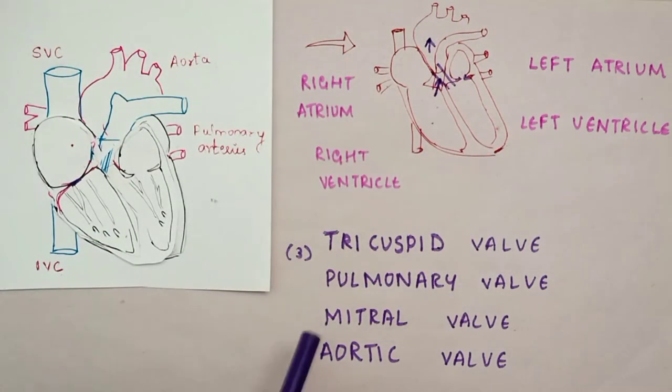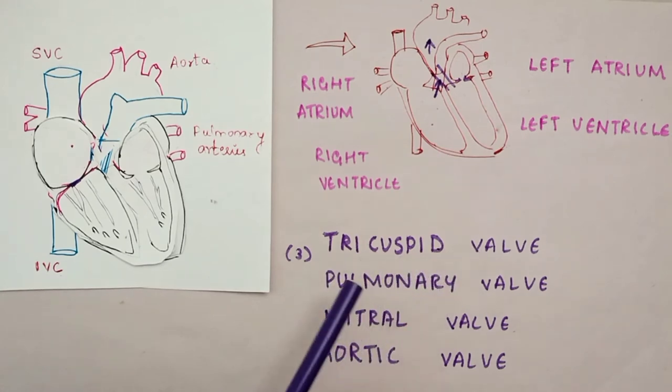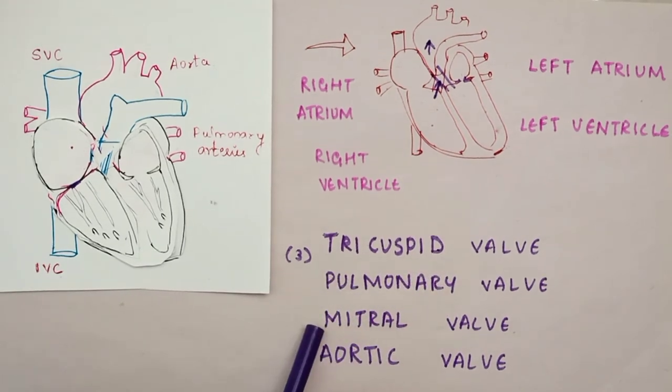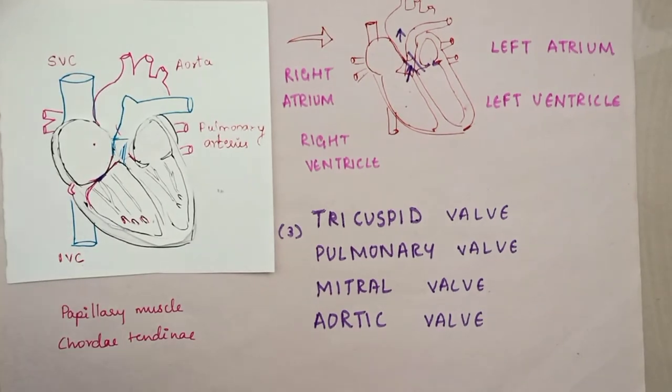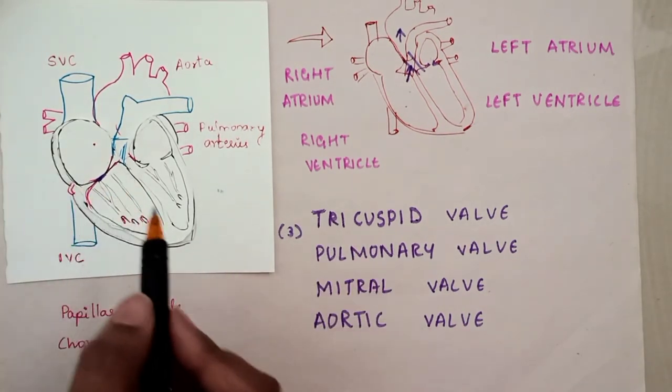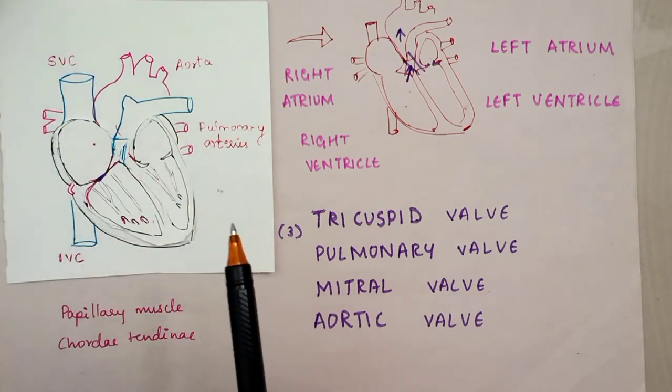The four valves are the tricuspid, pulmonary, mitral, and aortic valves. The atrioventricular valves are those between the atrium and ventricle.